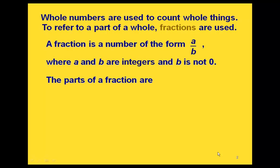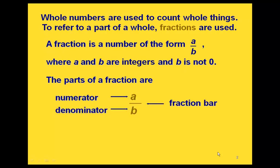A fraction is a number that looks like A divided by B, where A and B are both integers and B is not 0. The parts of a fraction are the numerator on the top, or A, the denominator on the bottom, or B, and the line between them — the division line — is also called a fraction bar.